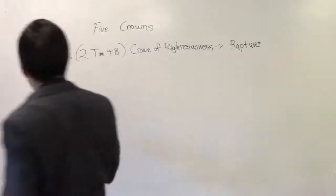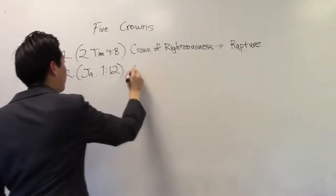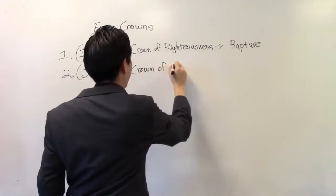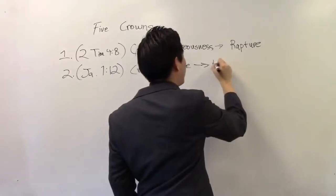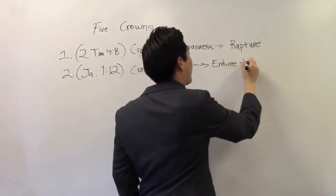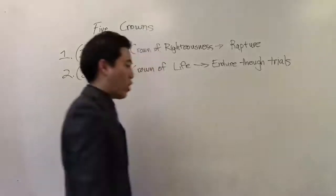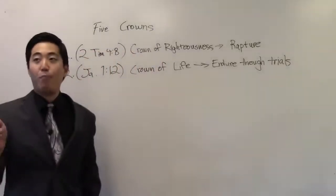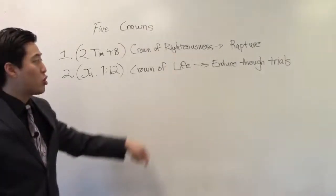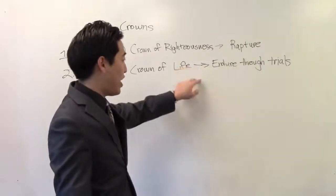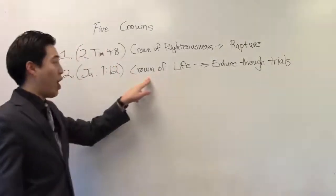Look at James chapter 1 verse 12. Can somebody read that for us? Blessed is the man that endureth in temptation, for when he is tried, he shall receive the crown of life, which the Lord hath promised to them that love him. So notice right here is the crown of life. So how do you get that crown of life? It's enduring through trials. It's passing through trials. So if you're going through trials right now, that's something to rejoice about. That's an opportunity for you to get this crown of life. If you have no trials in your life, you're not going to get this crown. So whatever temptation, whatever sin, whatever suffering or test God is putting you through, if you endure through it, you're going to get the crown of life.